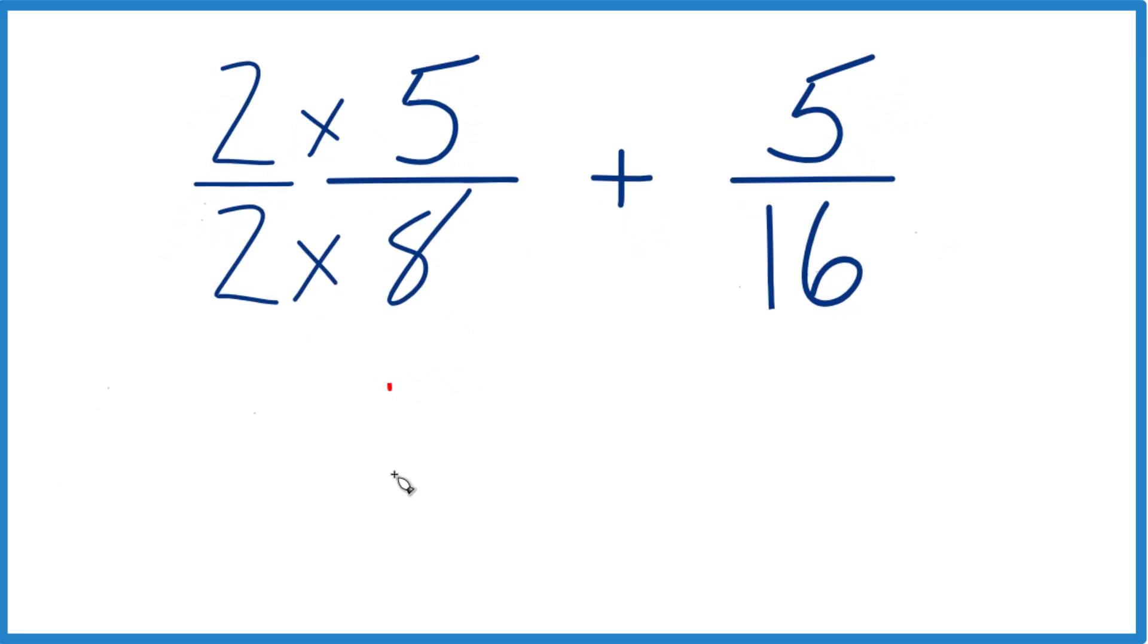2 times 5, that is 10. 2 times 8 is 16, and 10 sixteenths is an equivalent fraction to 5 eighths. They have the same value.